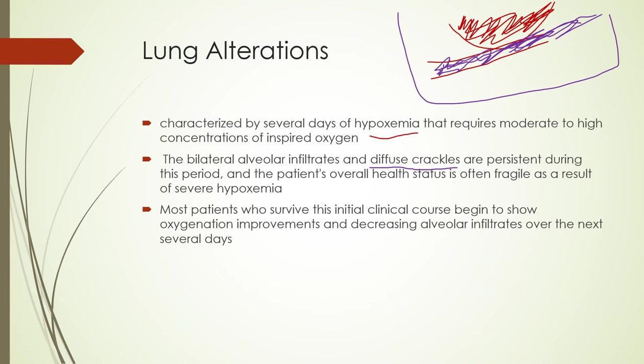It's a pretty fragile situation with these patients. You might see severe hypoxemia develop, which is why PO2 is important to look at on their blood gases. Most patients survive the initial course and begin to show oxygen improvements with decreasing infiltrates over the next several days — as long as we're supportive and treating the underlying cause, like the sepsis. If we're treating the sepsis, then they should start recovering and their lungs should start getting better.